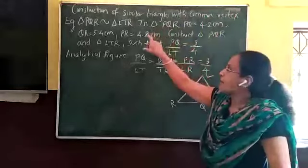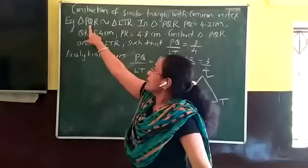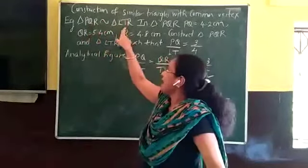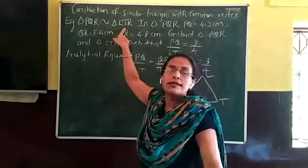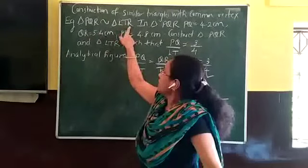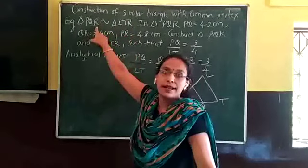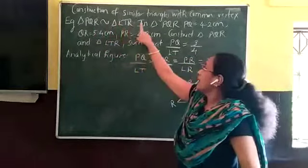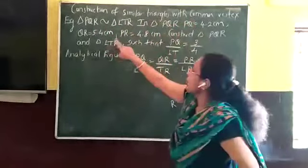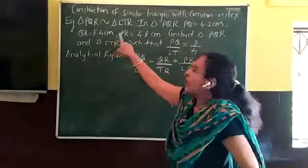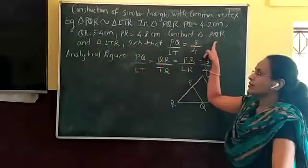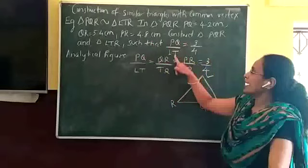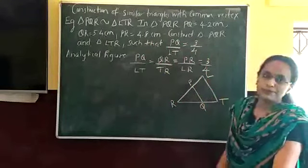So directly we start with an example today. We are supposed to construct two triangles PQR and LTR. If you closely observe, you see that they are not distinct triangles — they both share a common vertex R. Triangle PQR is similar to Triangle NTR. In Triangle PQR, PQ, QR and PR measurements are given, and we are supposed to construct NTR such that PQ upon NT equals 3 upon 4.